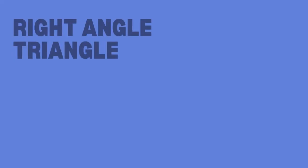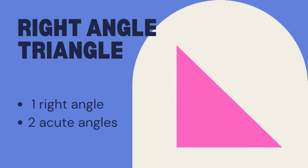This is a right angle triangle. A right angle triangle has one right angle and two acute angles.